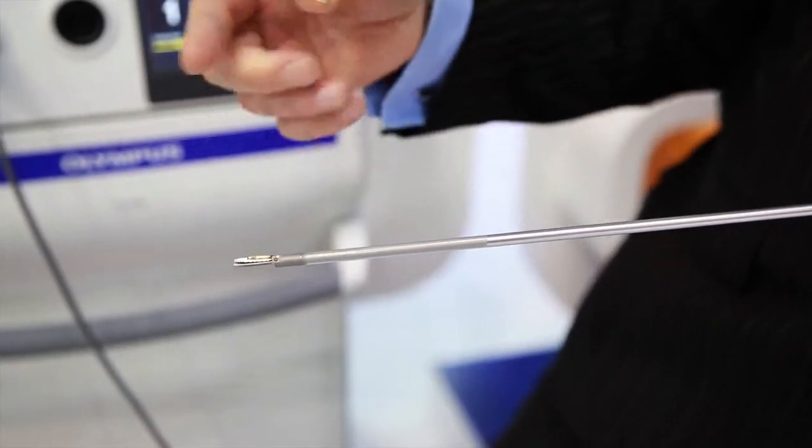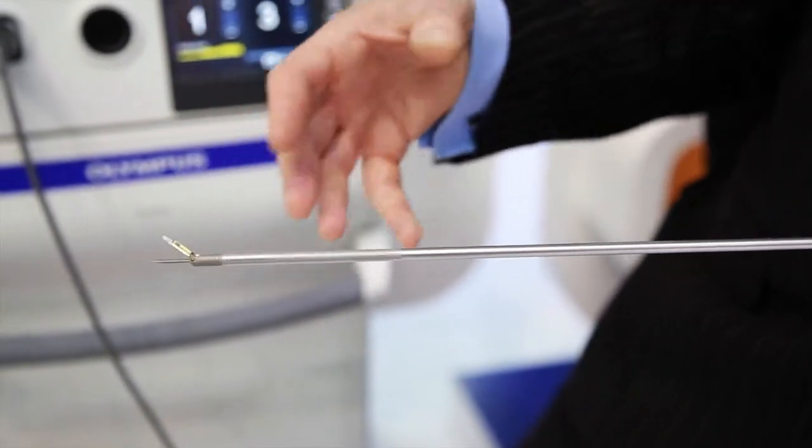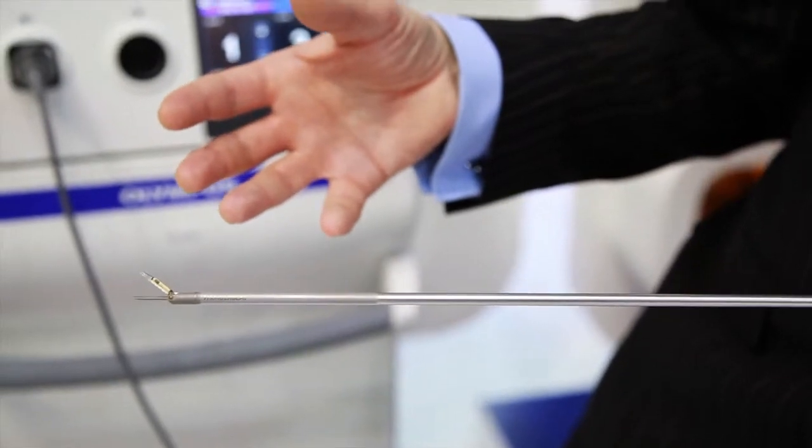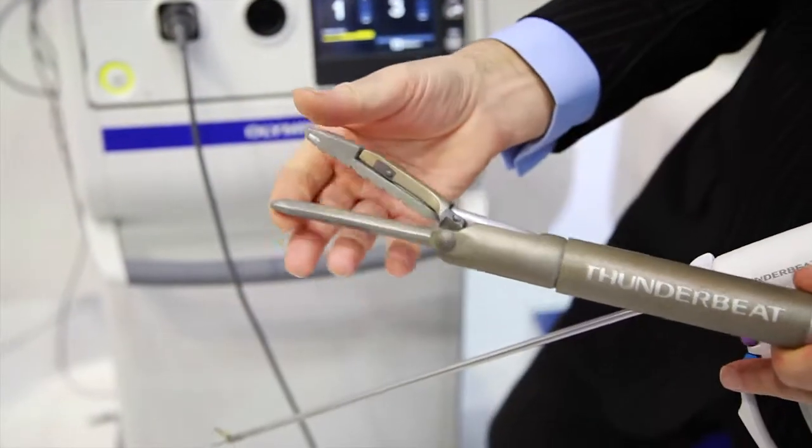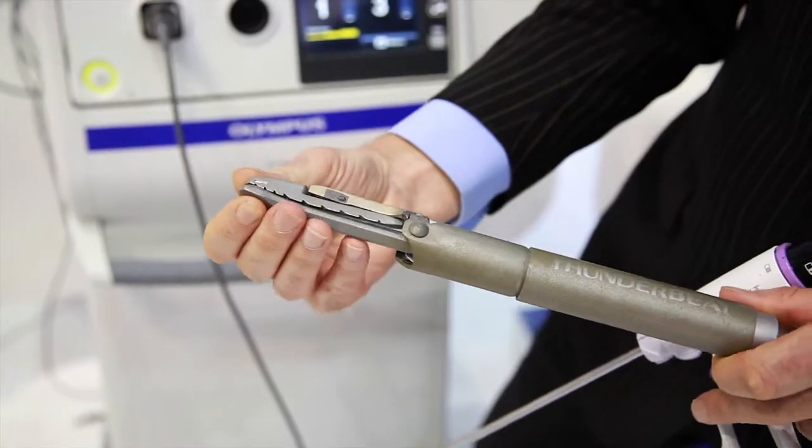This gives you a 7mm vessel sealing claim and it's currently the fastest on the market. This is a model of the handpiece. As you can see, it has two jaws.